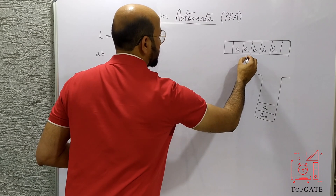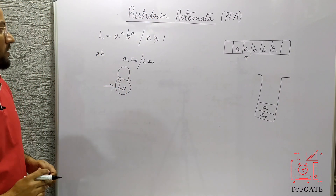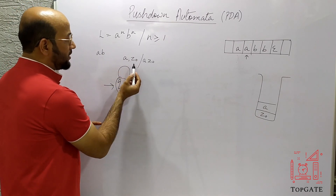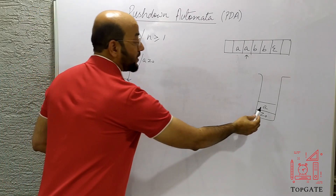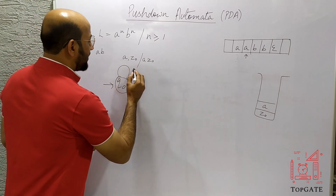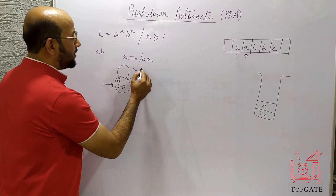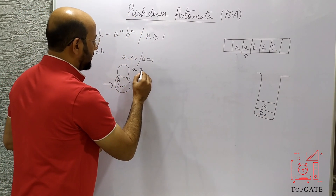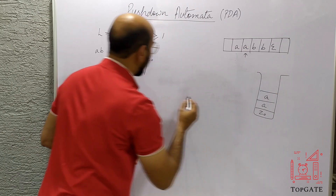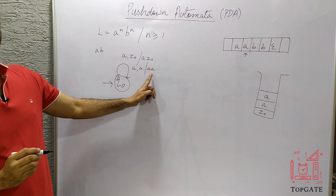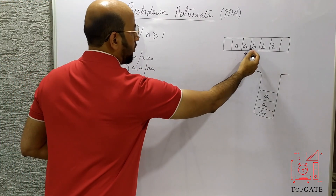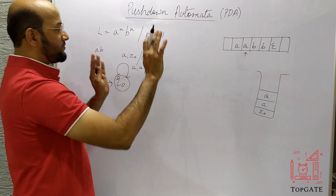After pushing the first A, the pointer returns to Q0. Now the second A comes, but the previous transition won't work because the top stack element is now A, not Z0. So I take one more transition: element to read is A, top stack element is A, and we push AA — performing the push operation again. This transition handles all subsequent A's, so any number of A's will be pushed using this self-loop.